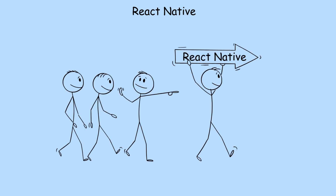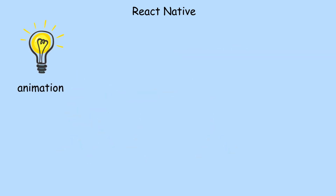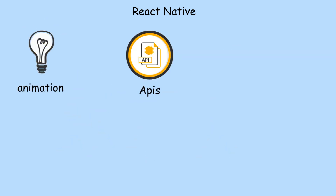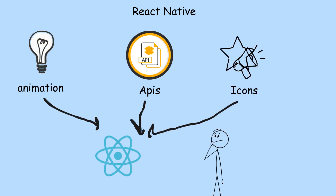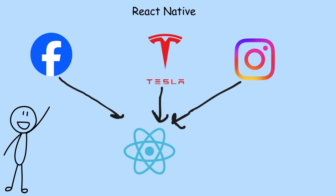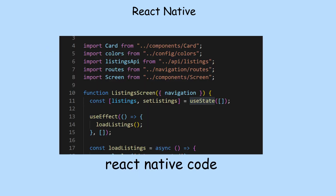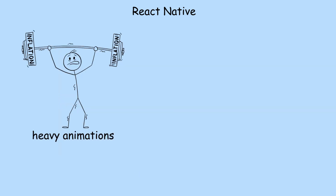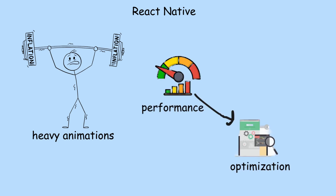The community is huge — libraries for animations, APIs, icons, everything you can think of. Many big names like Facebook, Tesla, and Instagram all use it. It's fast and efficient for most apps, but when you go heavy on animations or native features, performance can need some optimization.